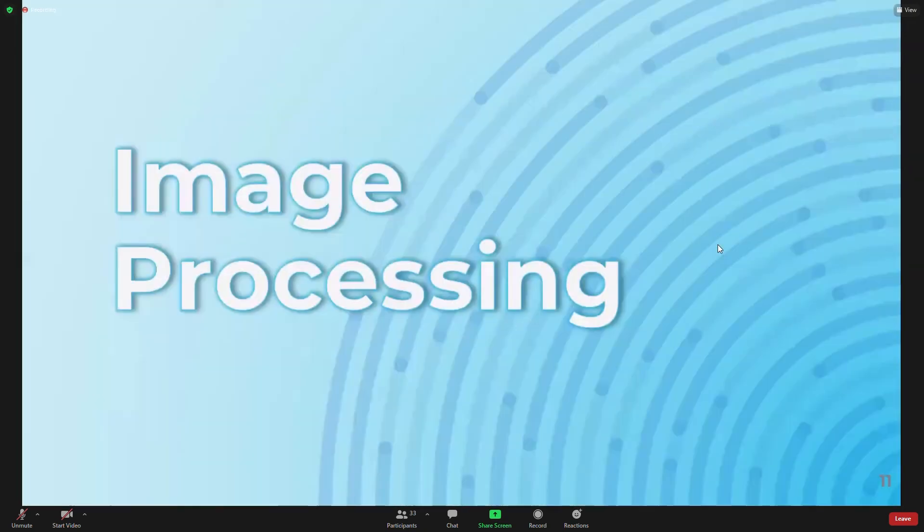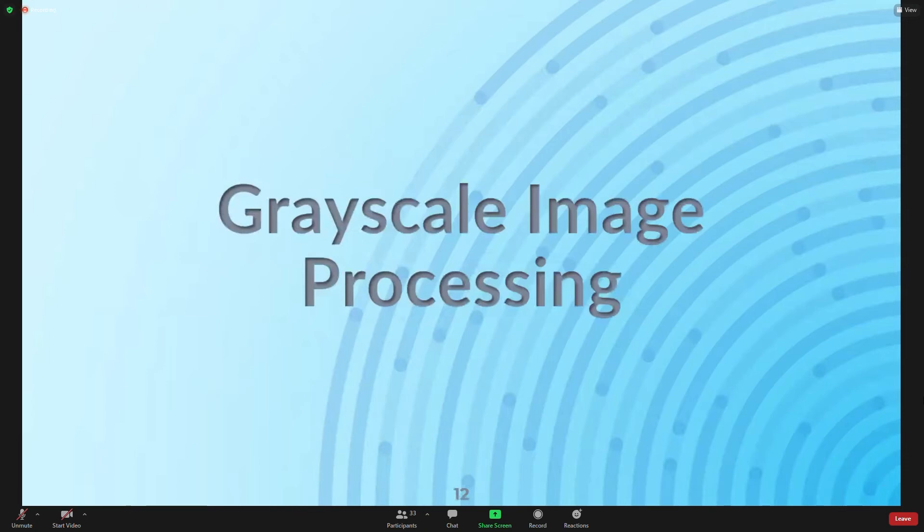Now let us discuss the application of SVD in image processing. Today we are going to see image processing of two types of images: grayscale image and color image. Firstly, grayscale image processing. Let us know what a grayscale image is.